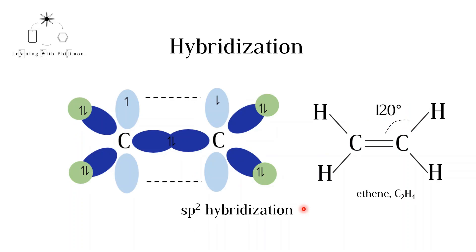This hybridization explains the bonding in ethene, C2H4. The three sp2 hybrid orbitals are used to form two single bonds to two hydrogen atoms and one single bond to the carbon atom. The remaining p orbitals, with a lighter blue color on each carbon atom, are used to form the double bond with each other. This is a pi bond, as discussed in the previous video.